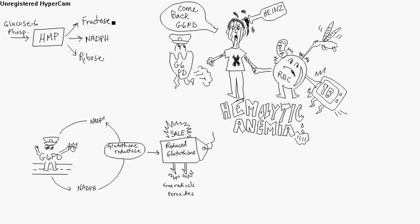Red blood cells are dealing with a lot of oxygen — that's what they're binding to. So they produce a lot of superoxides, which are very strong radicals. When superoxide is produced, the cell depends on reduced glutathione to neutralize these radicals. As long as you have reduced glutathione, you can handle the superoxide production.